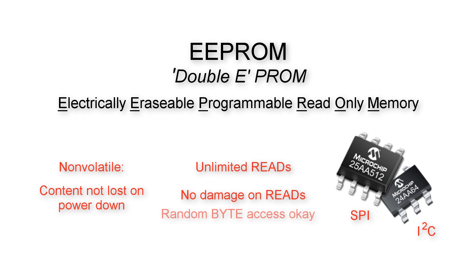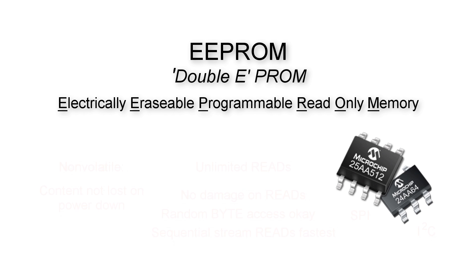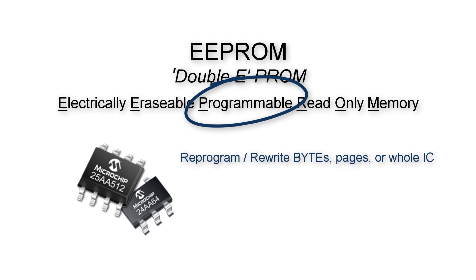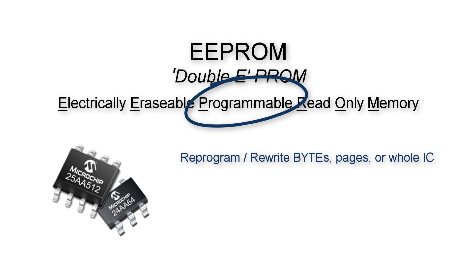You can jump around and read any address, but because it is serial, sequential location reads will yield more bytes of memory quicker. And yes, you can change the memory content on the fly in the field.